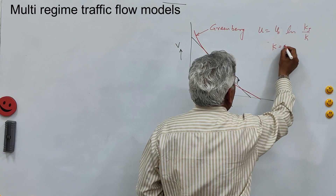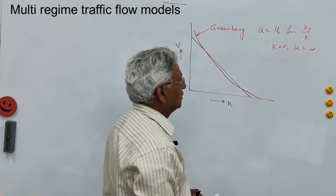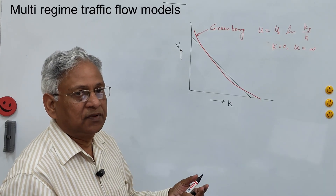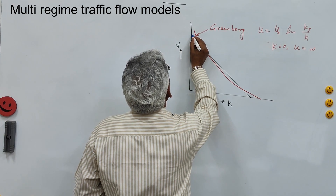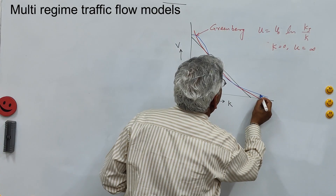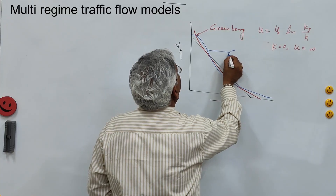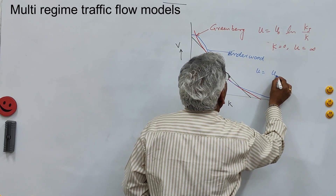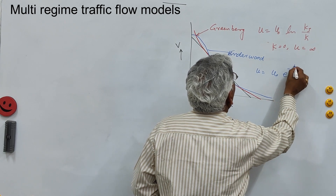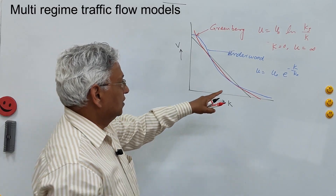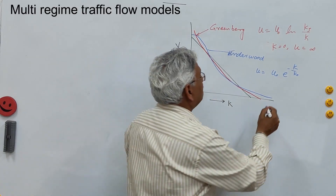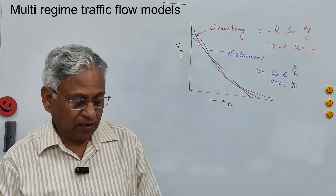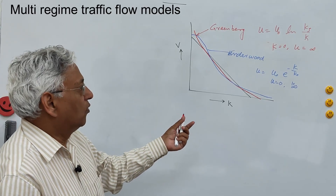When k is zero, u becomes infinite — that is the drawback of this equation, meaning it cannot be used to predict speed under low traffic densities. Third is the Underwood model. Underwood suggested an exponential relationship between speed and density: u = u₀ · e^(−k / k₀). Again, when u approaches zero, density becomes very high — k becomes infinite — so the Underwood model is also not suitable for high traffic density conditions.